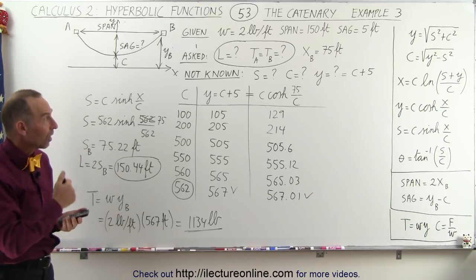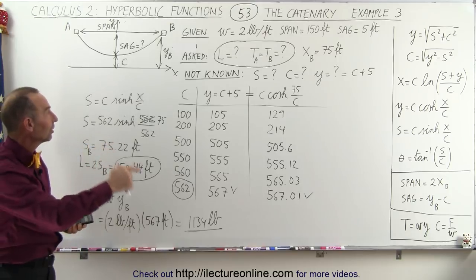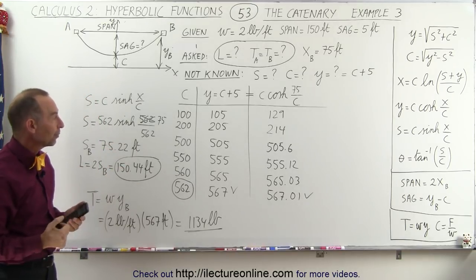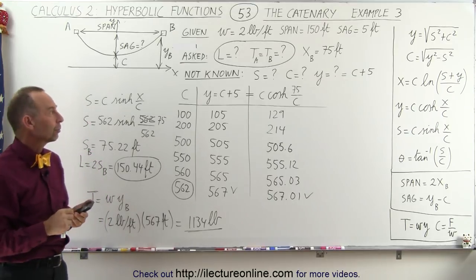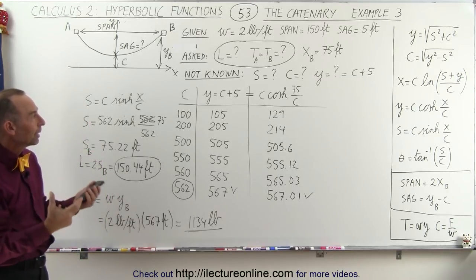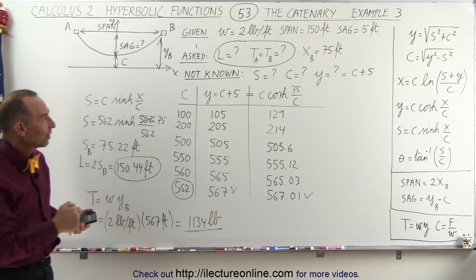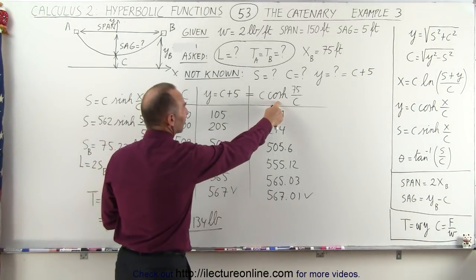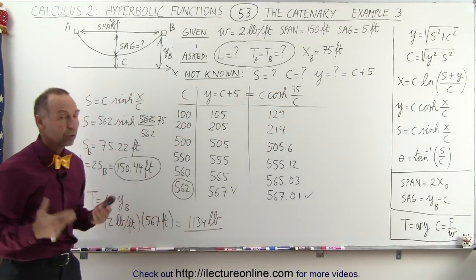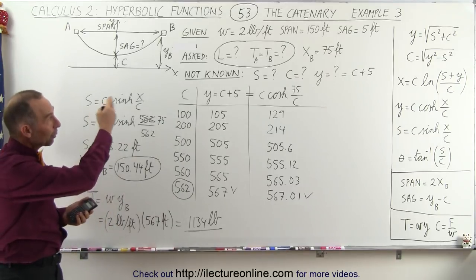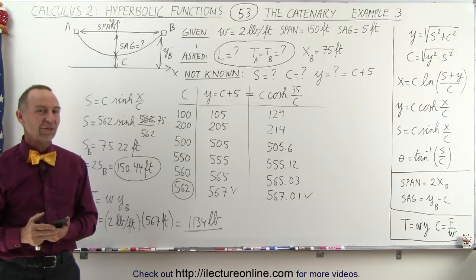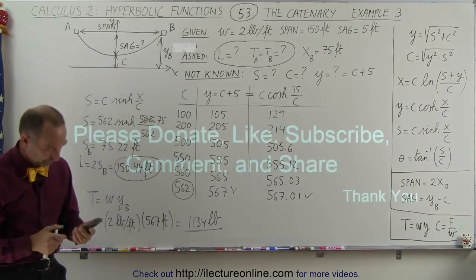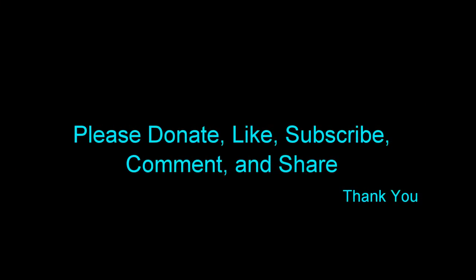But again, notice, this is how we use a hyperbolic function to solve catenary problems, hanging cable problems, where usually we have to go through an iterative process like that, depending upon what is known. In the previous example, we used the hyperbolic sine to do this. In this example, we use a hyperbolic cosine. It all depends upon what's given, and what equations are available to us. And that's how it's done. So thank you very much.